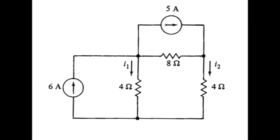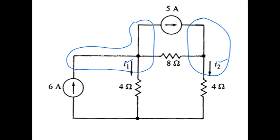Okay, the problem statement says we're supposed to find the current I1 and the current I2 using the node voltage method. First thing to do is count up how many nodes we have. I see one, two, and a total of three nodes.